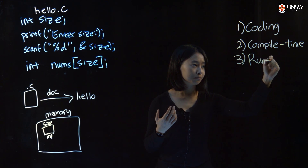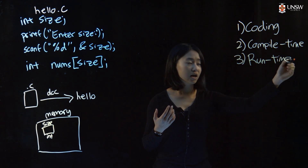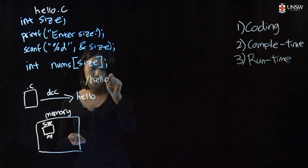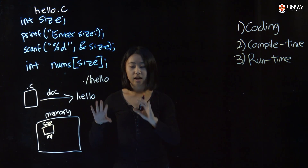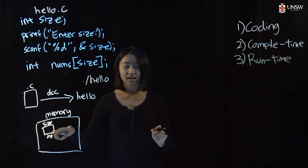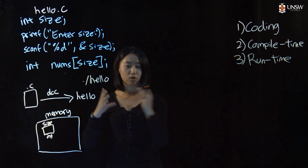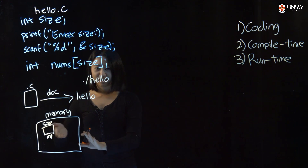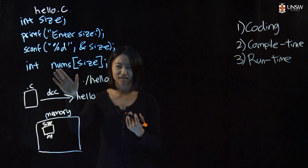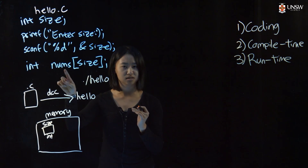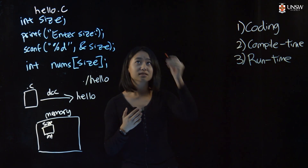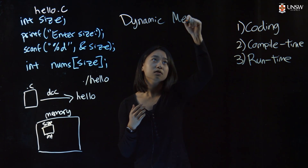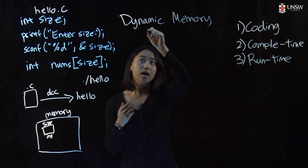The third phase is called runtime. This is when we actually run our hello program using the ./hello command. Only then can the user enter an input for size, and then you have an actual number for how large you want your nums array to be. So once the compiler gets to the array declaration, it'll get stuck because it doesn't actually know how many bytes to allocate to the nums variable. To solve this, we have dynamic memory allocation.